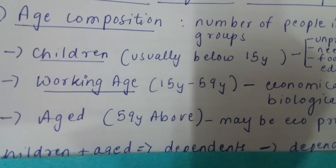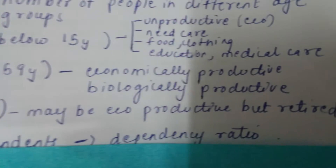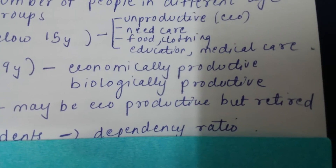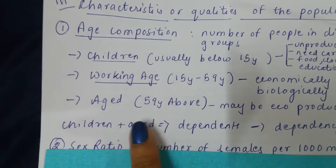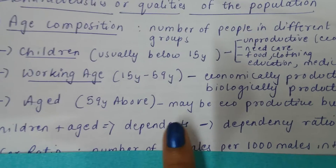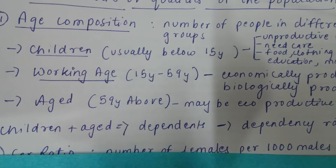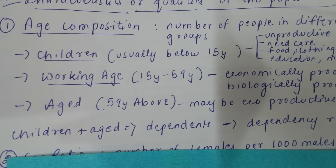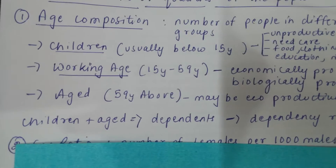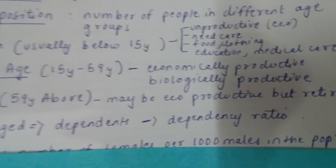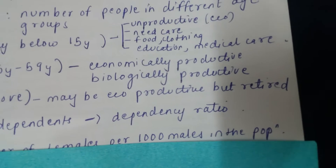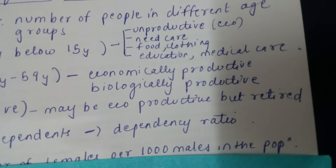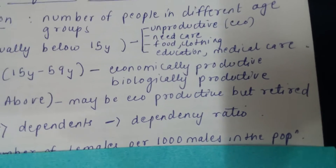The third category is the aged, which is 59 years and above. At this age, people are usually retired and their productivity has decreased. Children plus the aged population are basically the dependents. If the number of dependents keeps increasing, as in the case of China now — which followed the one-child policy and now has a large aged group with fewer new children — the working population becomes very less, which is not good for the economy. The dependency ratio refers to how many dependents each working person is supporting.